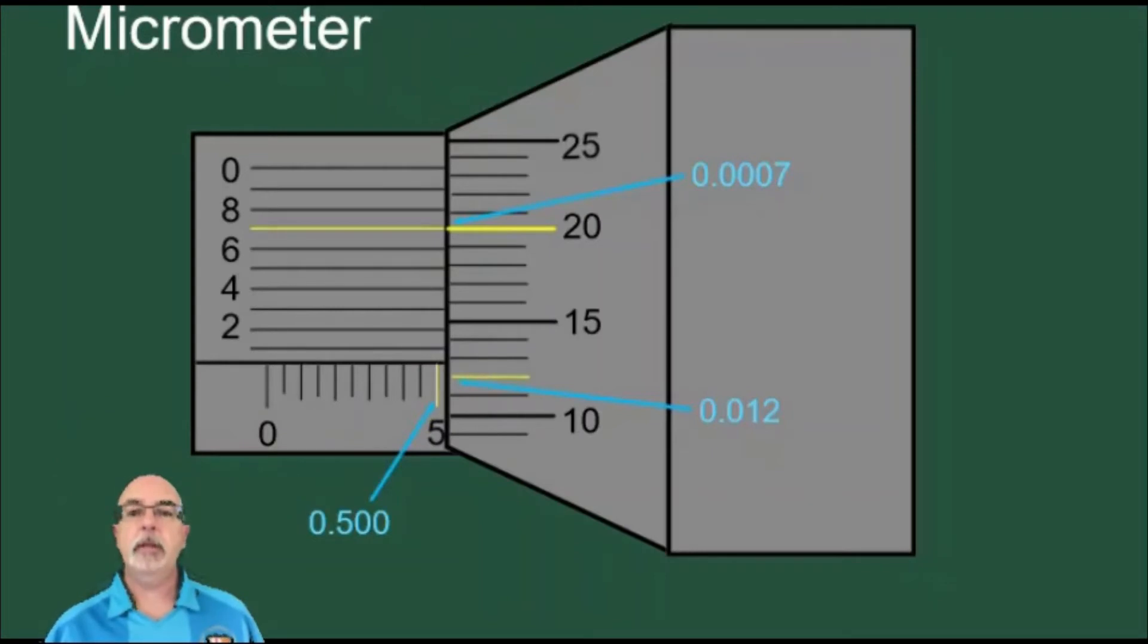That means the first number we need is 0.500. This means five tenths of an inch or five hundred thousandths of an inch. We write down 0.500.